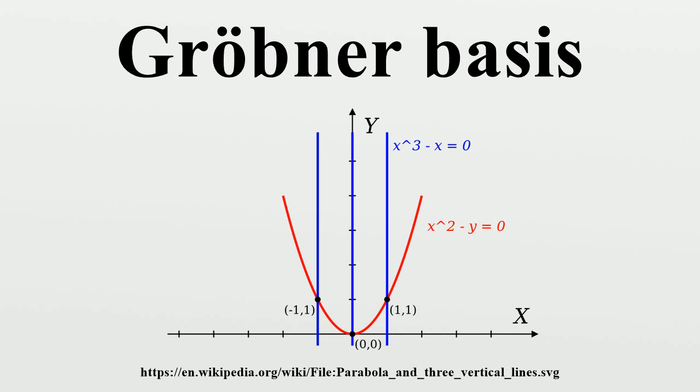If F is a finite set of polynomials in a polynomial ring R, the ideal generated by F is the set of linear combinations of elements from F with coefficients in all of R.